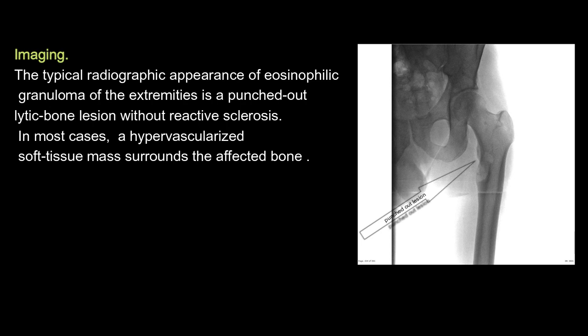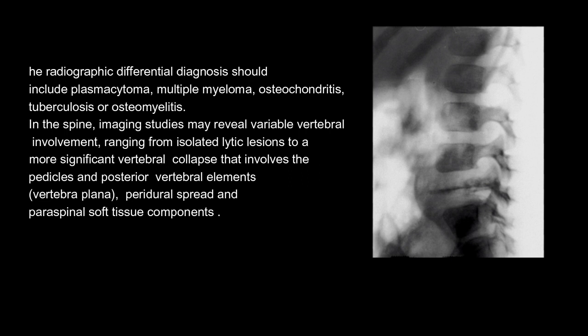Imaging: the typical radiographic appearance of eosinophilic granuloma of the extremities is a punched-out lytic bone lesion without reactive sclerosis. In most cases, a hypervascularized soft tissue mass surrounds the affected bone. The radiographic differential diagnosis should include plasmacytoma, multiple myeloma, osteochondritis, tuberculosis, or osteomyelitis. In the spine, imaging studies may reveal variable vertebral involvement ranging from isolated lytic lesions to a more significant vertebral collapse that involves the pedicles and posterior vertebral elements.